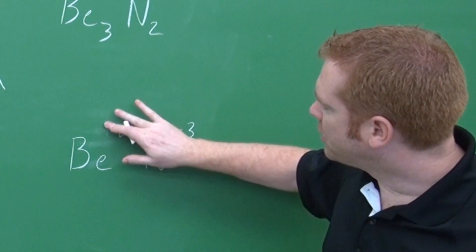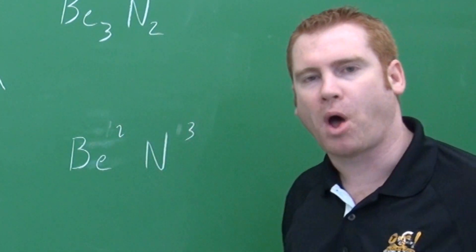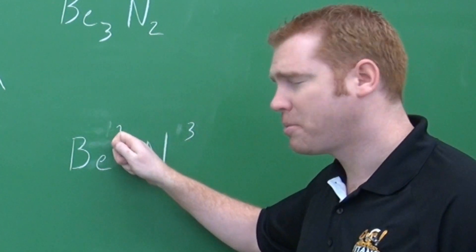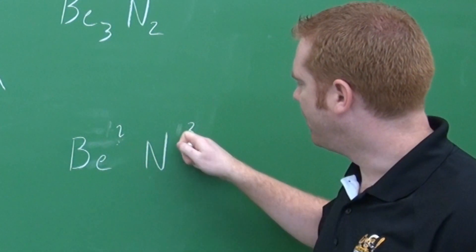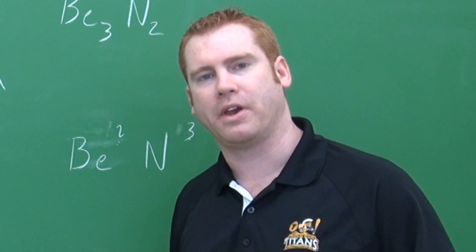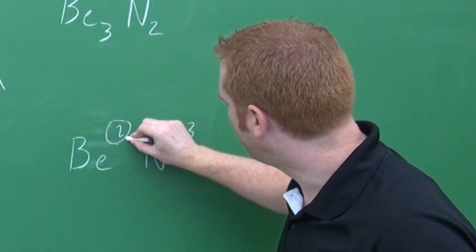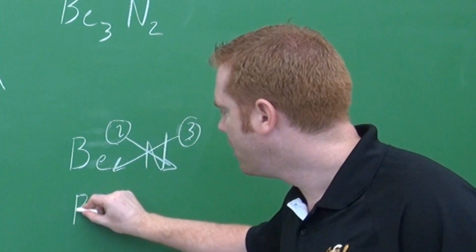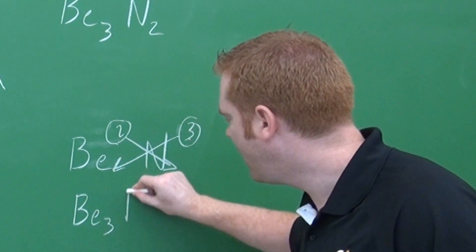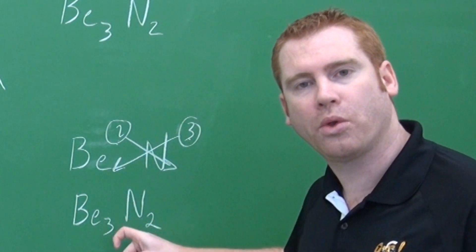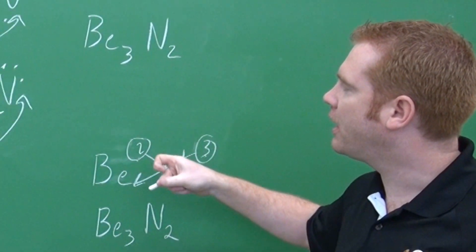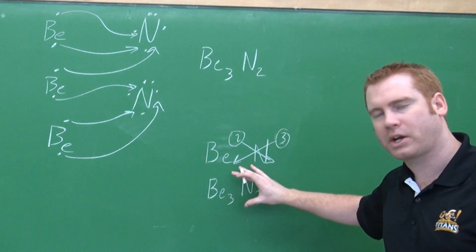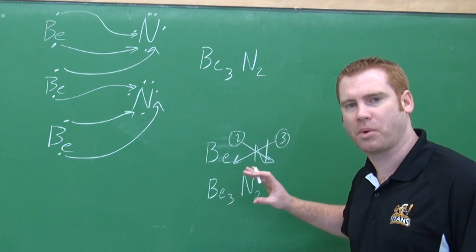Now what I'm going to do, I am going to ignore the charges. I don't care if it's positive or negative. I just am interested in the numbers. What I do is I'm going to take this two and this three, and we're going to do what we call the crisscross method. I'm going to take the two and bring it down here beside the nitrogen. Take the three, bring it down beside beryllium. So I get Be3N2. And lo and behold, we have the exact same thing that we just did here. And while this was easier than the Bohr-Rutherford diagrams, this is quicker and easier and will get you the right answer faster.